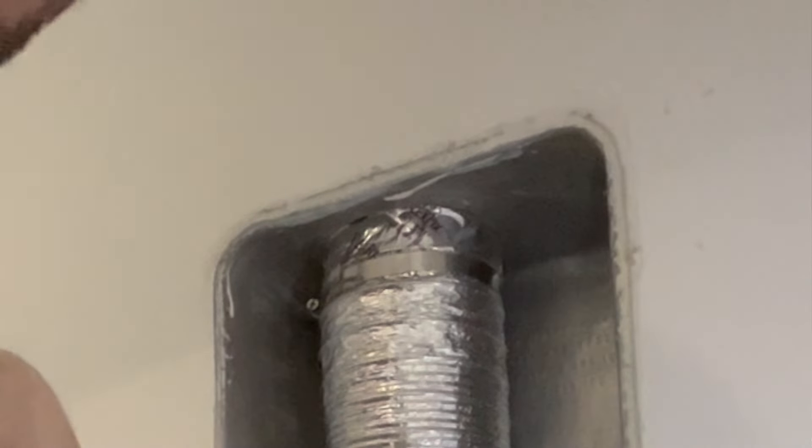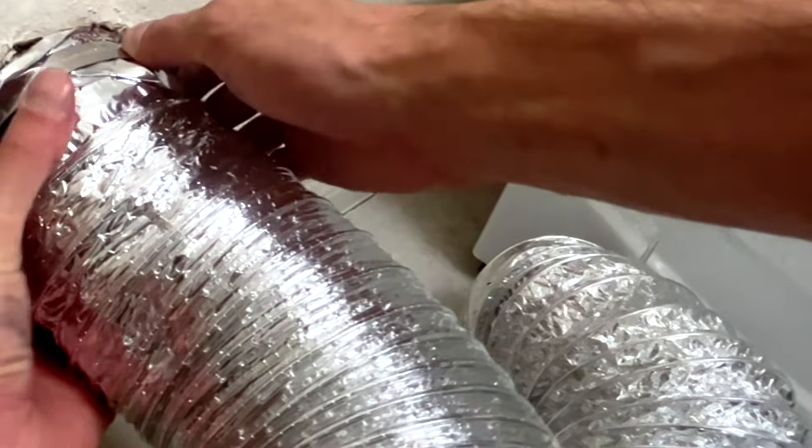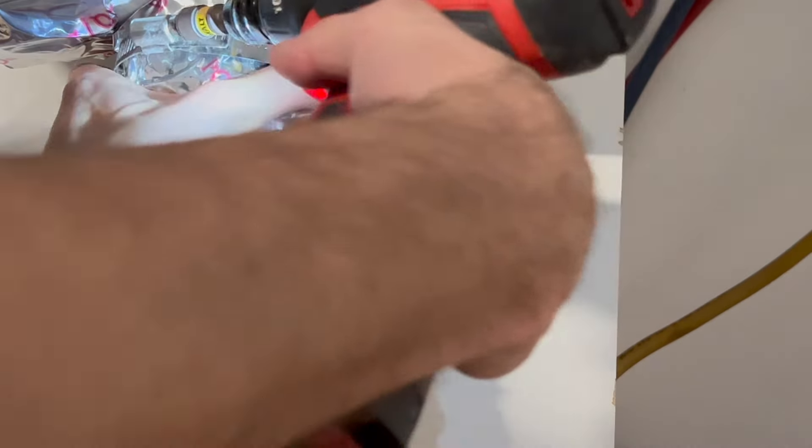These clamps, you could either use the Phillips or you could use a 5/16th bit to get a nice good grip on it and tighten it well. Do not use other clamps. Definitely do not use the spring clamps if you're using one of these semi-rigid vents.